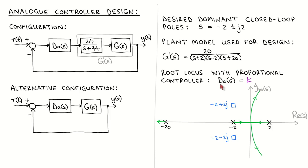Let's first try a proportional controller. With a proportional controller, the root locus will be given as shown here in green. There is a locus on the real axis between the poles at minus 2 and 2, which breaks away around the origin of the S-plane. This part of the root locus bends into the right half plane. There is also a locus to the left of the pole at minus 20. The desired dominant closed loop poles are shown in blue.